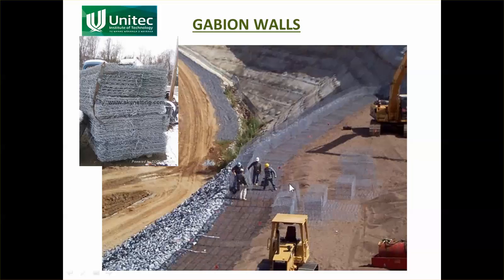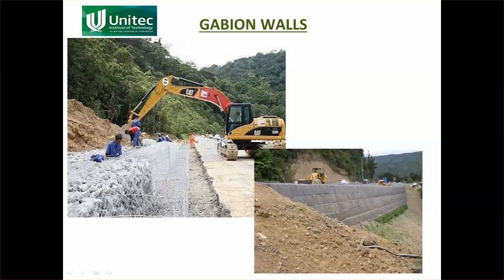Gabion walls are basically rock-filled wire baskets. The wire baskets arrive on site as flat pack, you open them up, wire them together, and put them into position. A digger or loader brings rocks up to the gabion basket, but each rock needs to be placed by hand and locked in with the others — it's not something you can do by tipping from a machine. So it is labour intensive, but all you need is an excavator or loader. The end product can be five metres high, as each gabion is one metre tall. The wall is slightly stepped, going back about 100–200 mm at each level, to make it more stable.